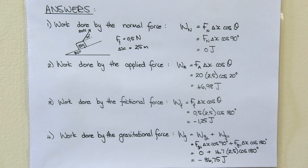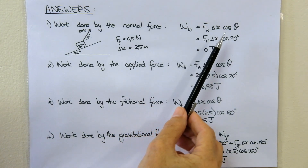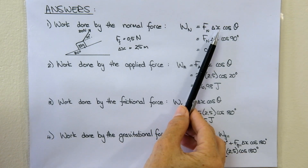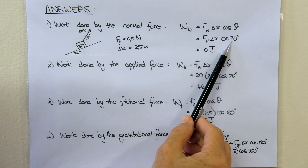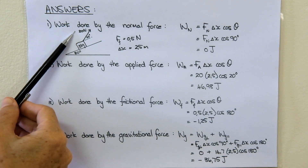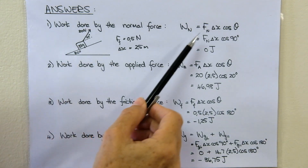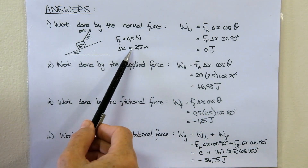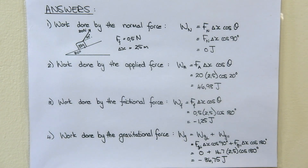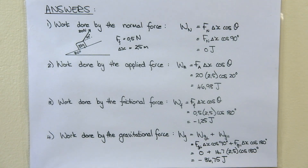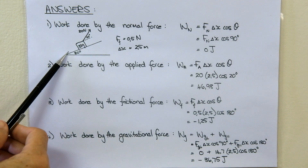The first question: calculate the work done by the normal force. We do not need to calculate the normal force itself because the angle between the normal force and the displacement is 90 degrees, and cos of 90 is zero. So the normal force times displacement times cos of 90 equals zero joules. The normal is perpendicular to the box on the incline, so the angle between the normal force and the 2.5 meter displacement is 90 degrees. Any force perpendicular to the direction of displacement does zero joules of work.